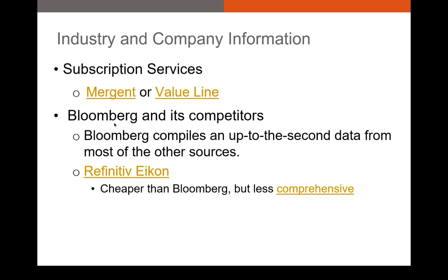Bloomberg, which we'll use in this class, the Bloomberg terminal is kind of a one-stop shop for information. It is, as far as I can tell, the most complete resource for data that would be relevant to investors. It contains most of the data that these other resources collect, and it allows you to easily download that data, like S1s or 10-Ks. There are competitors to Bloomberg, like Thomson Reuters Icon platform. Icon is significantly cheaper than Bloomberg, which runs around $21,000 a year for a terminal. The drawback is that once you add up all the features to make Icon comparable to Bloomberg, the price ends up being about the same.